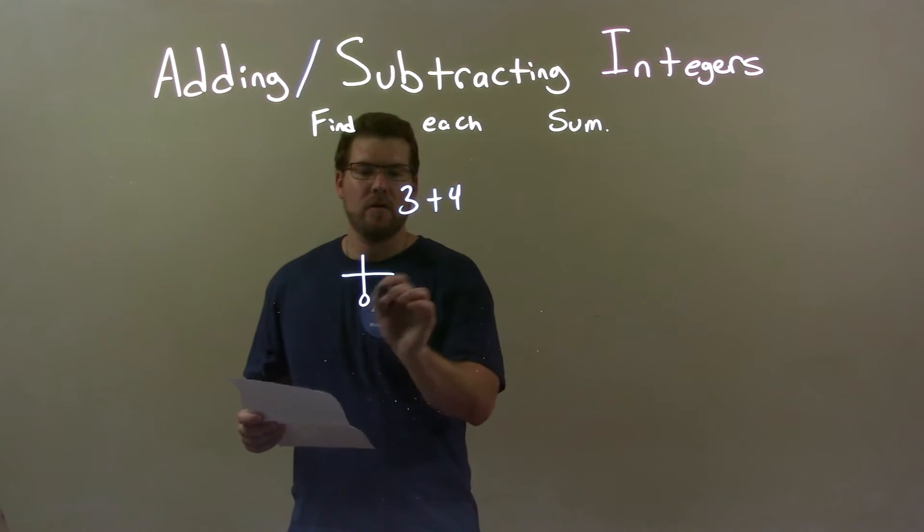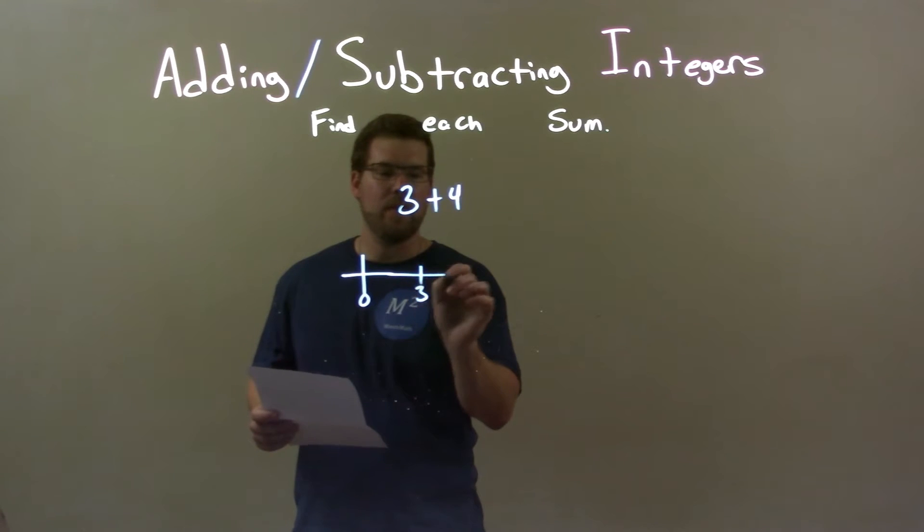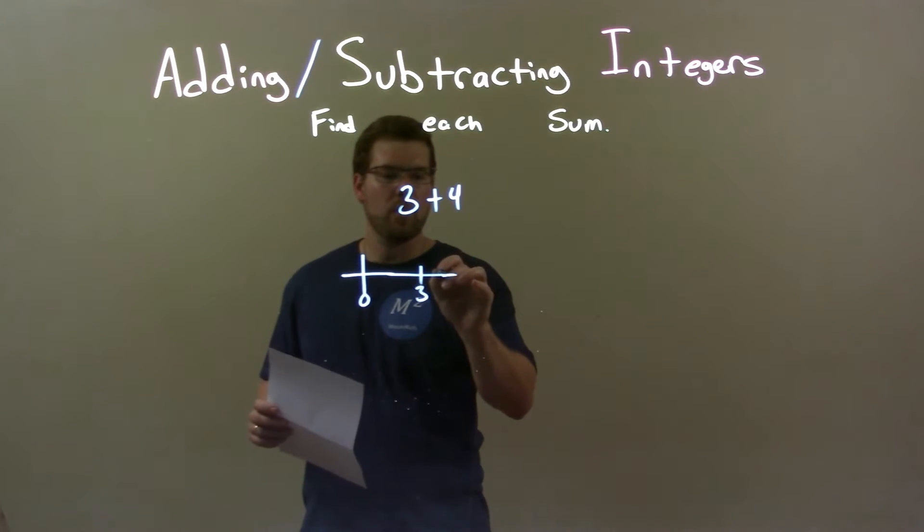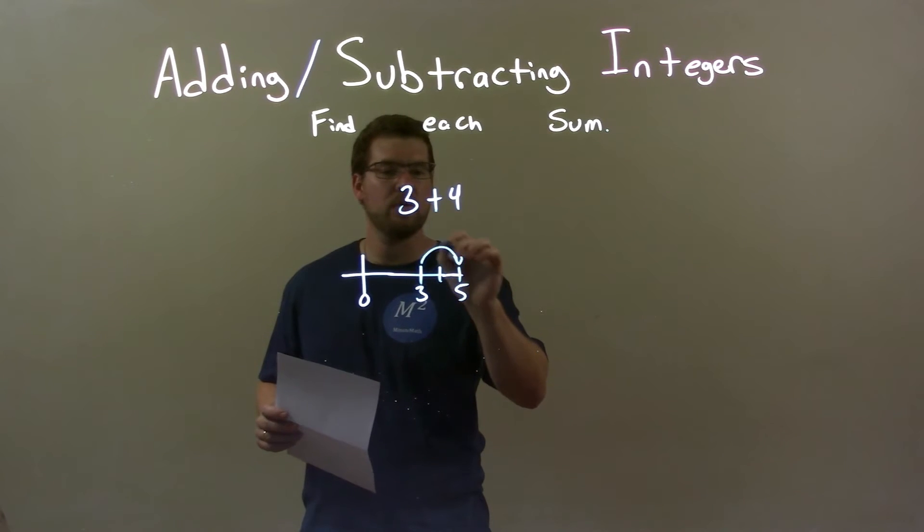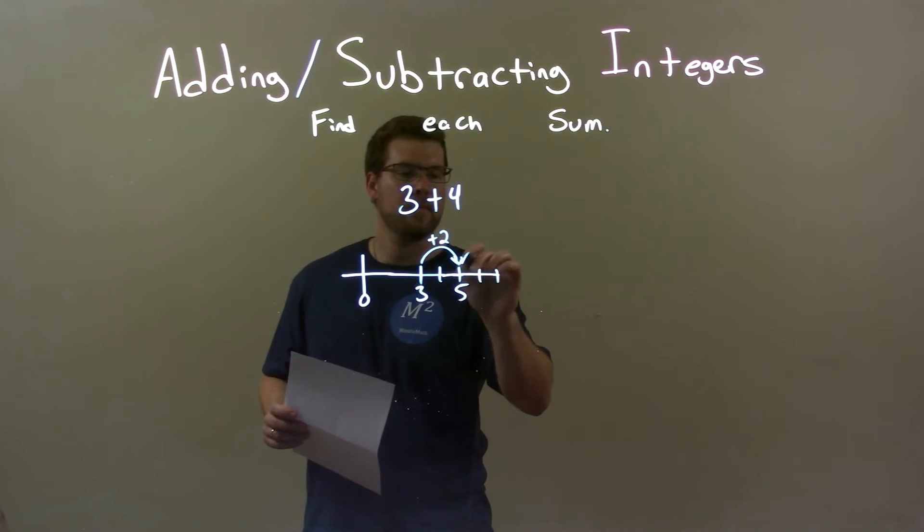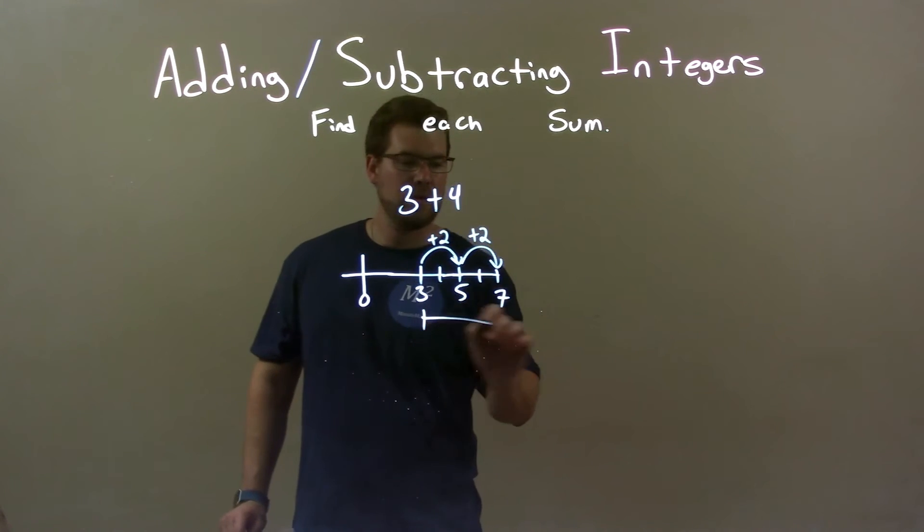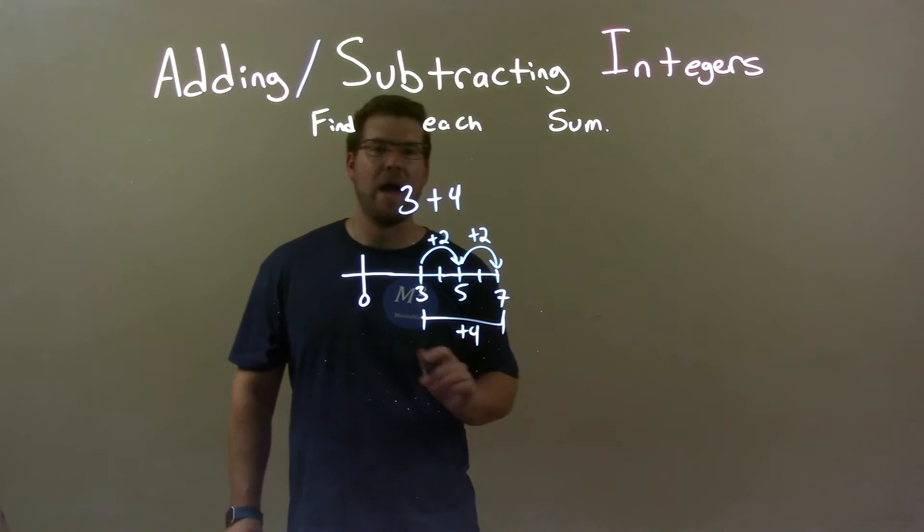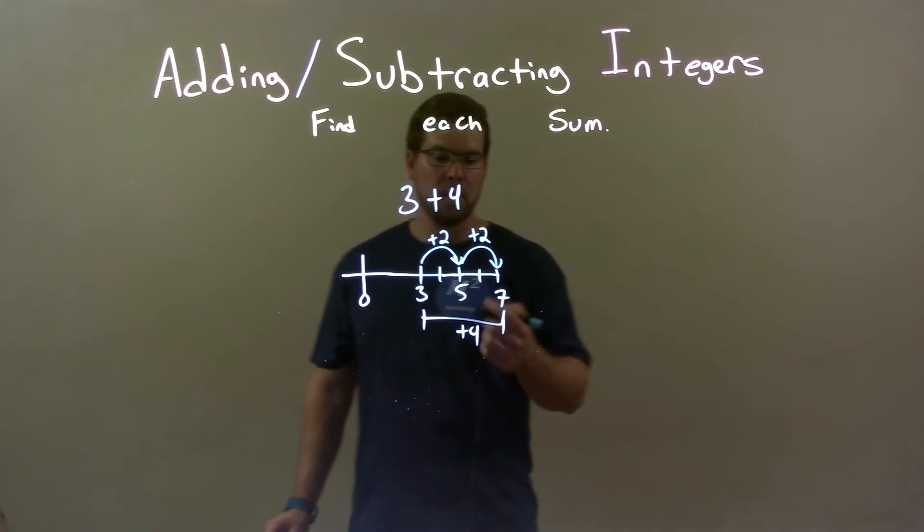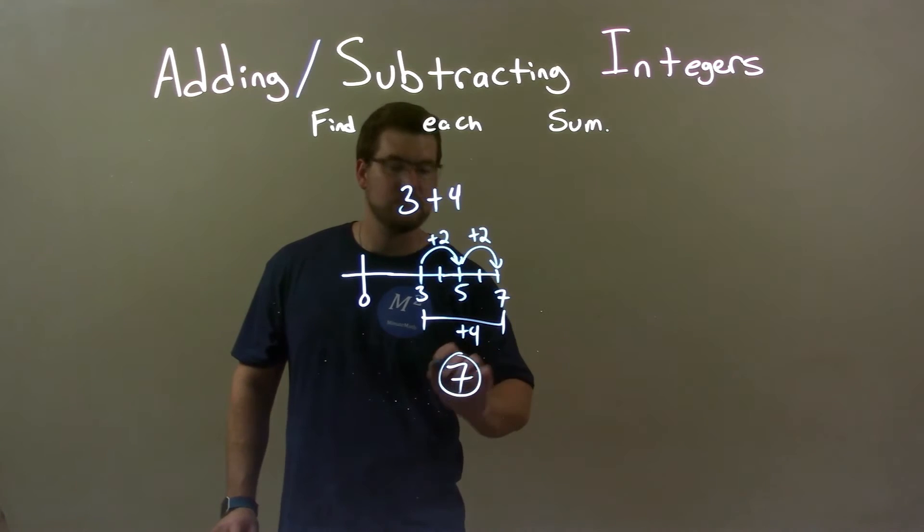Well, if we start with 0 on the number line, and we get to 3 right there, we know 2 more spots gets us to 5. So if we go 3 plus 2, we're at 5, and then we do 2 more, we're at 7. And 2 plus 2 is just adding 4, so we're going to the right there, and so our final answer is 7.